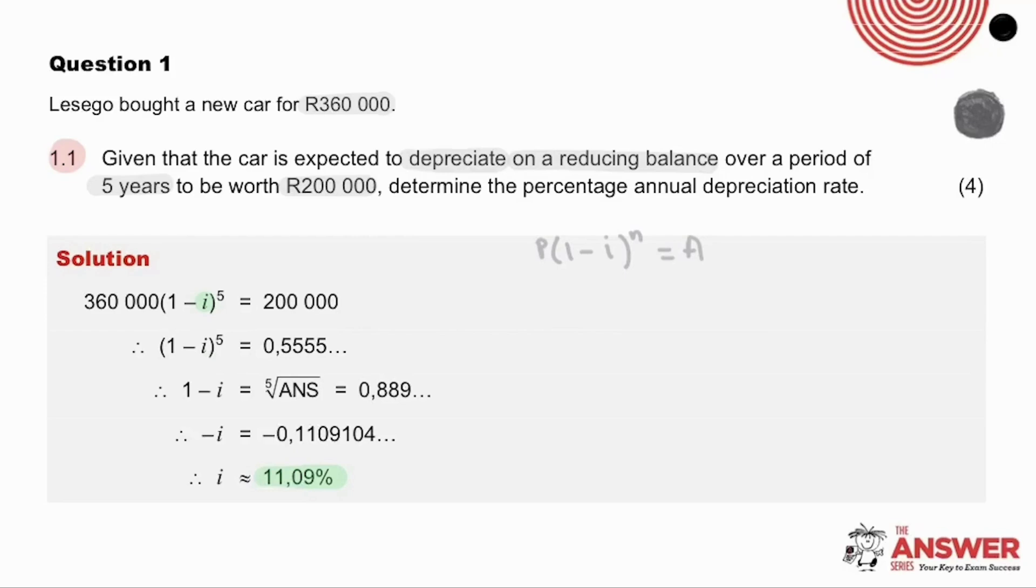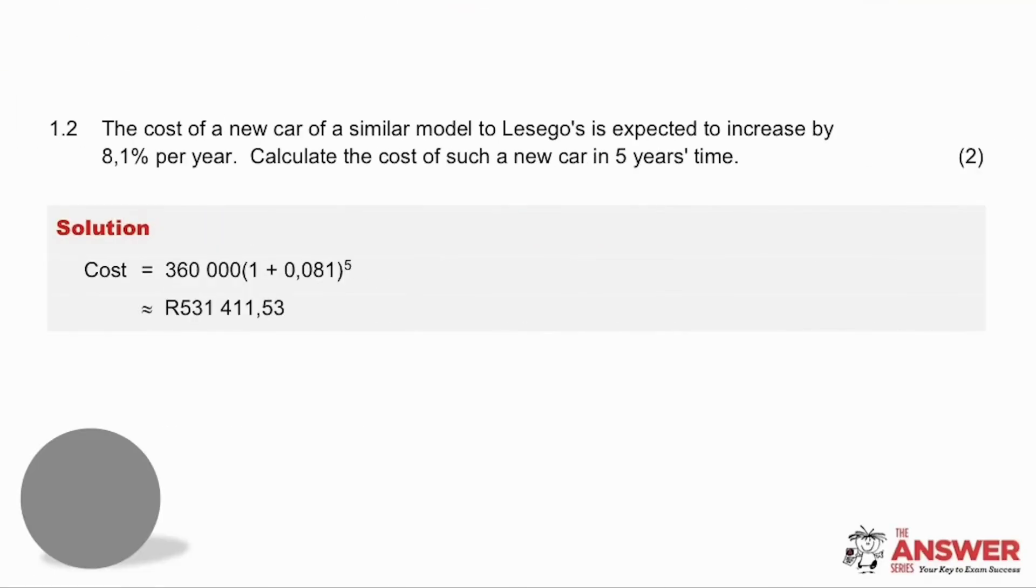Pause here to check through the working if necessary. The second part question is only worth two marks, so this tells us that it shouldn't require a whole lot of calculations and ideally not too much time. It says the cost of a new car over this five-year time period will increase, so we use the compound increase formula. And here our answer for how much the car will cost in five years' time is R531,411.53.